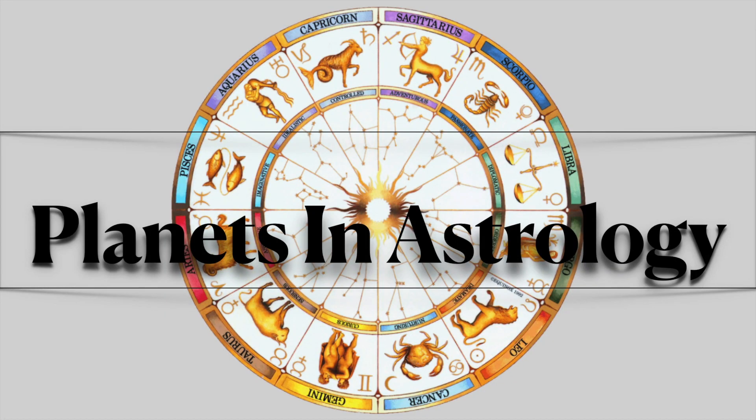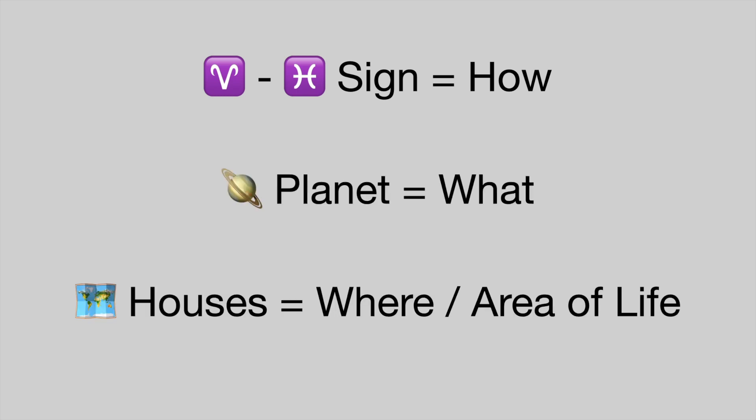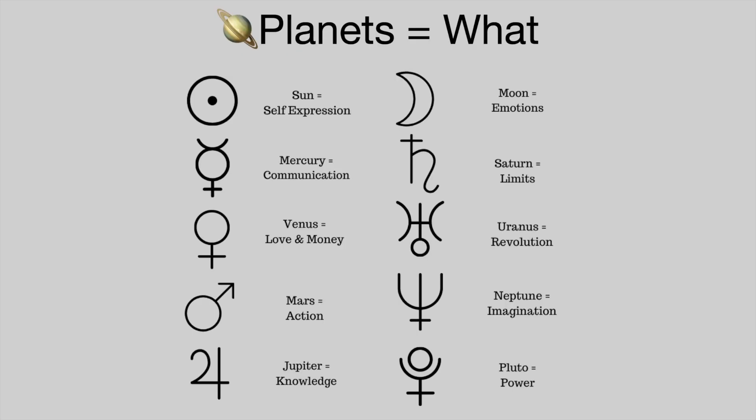Planets in astrology: the sign is the how, the planet is the what, and the houses are the where — the area of life. Here is a little cheat sheet with one-word terms for each planet. The sun is self-expression, moon is emotions, mercury is communication, saturn is limits, venus is love and money, uranus is revolution, mars is action, neptune is imagination, jupiter is knowledge, and pluto is power. At the end of this video there is a more detailed cheat sheet you can screenshot, with the timestamp in the description box.